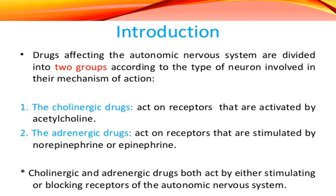This is part 2 of our medicinal chemistry on the nervous system. Let's move forward to the introduction about cholinergic and adrenergic drugs that belong to the autonomic nervous system. These drugs under ANS are called cholinergic and adrenergic drugs. The naming originates from acetylcholine for cholinergic, and from epinephrine or adrenaline for adrenergic.